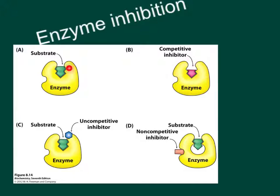Over here we have an inhibitor. For example, if the enzyme acts on the top part of the substrate and uses the bottom part for binding, if you created a molecule that didn't have this top part, it could bind there and the enzyme couldn't do anything to it — so it would be a competitive inhibitor. It's competitive because it's competing for the same binding site. The higher concentration is going to be the winner of the competition, and you can basically overcome competitive inhibitors by increasing the substrate concentration.